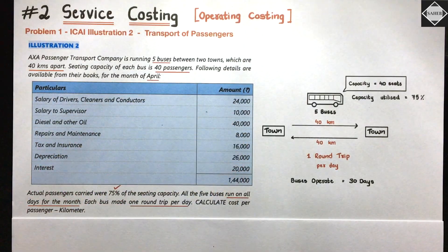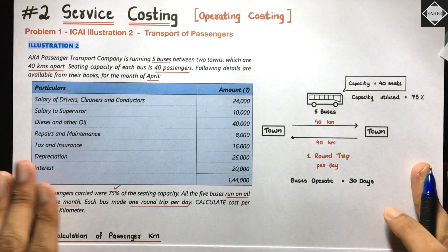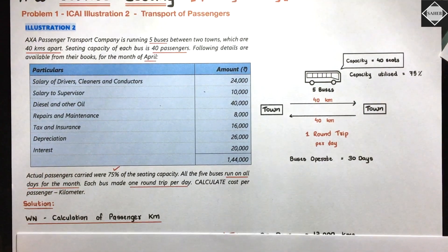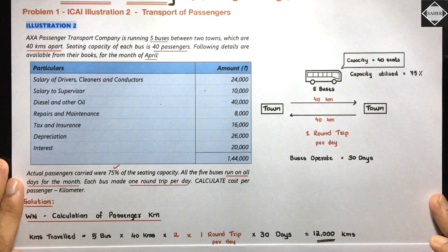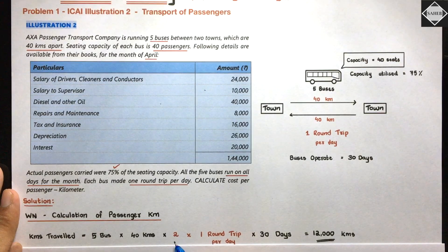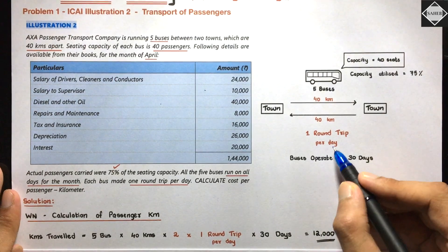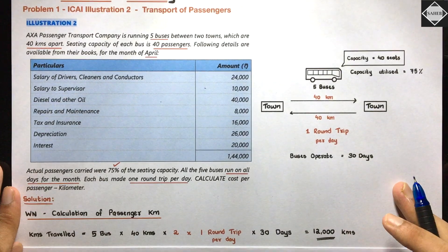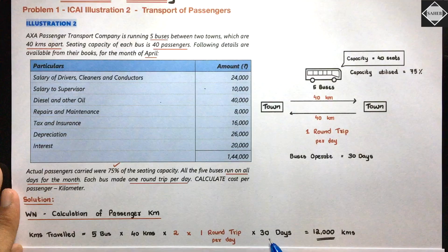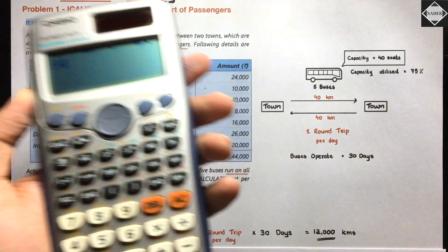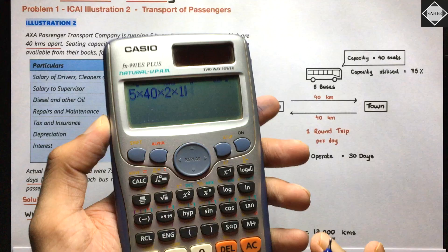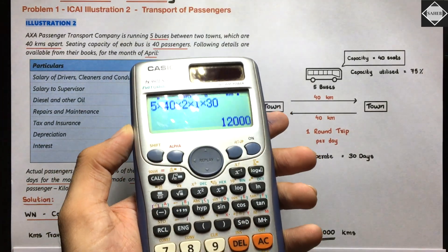Calculation of passenger kilometers: First, calculate kilometers traveled. There are 5 buses, the distance is 40 kilometers, it's a round trip so multiply by 2, one round trip per day so multiply by 1, and for 30 days in April multiply by 30. That gives: 5 × 40 × 2 × 1 × 30 = 12,000 kilometers. This is the total distance traveled by all five buses in April.